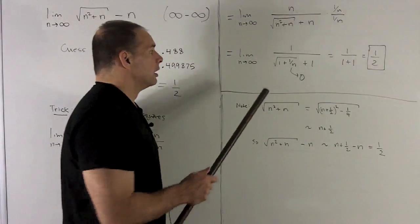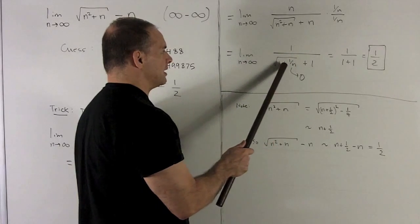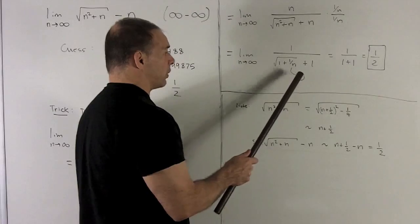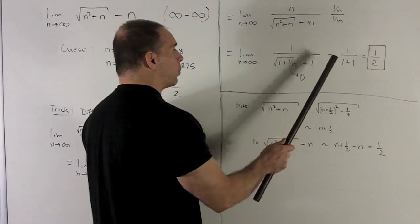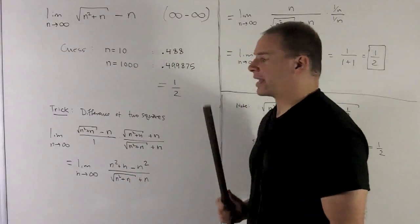We take the limit. Square root is a continuous function. So that means I'm allowed to push the limit to the inside. And then that 1 over n is going to go to 0. So I'm left with 1 over 1 plus 1, or a half, which agrees with my numerical guess.